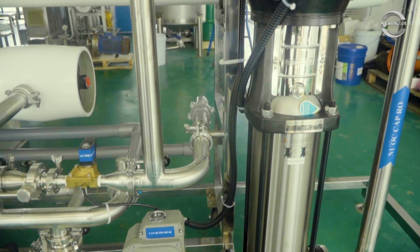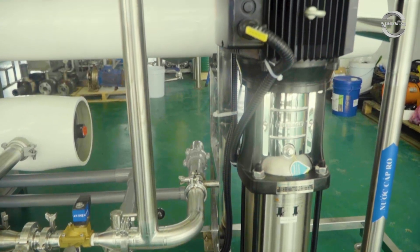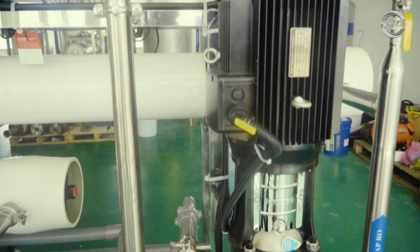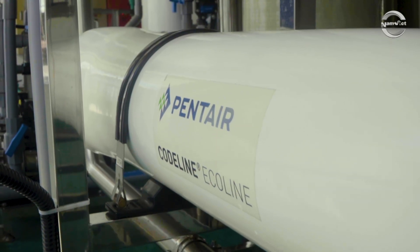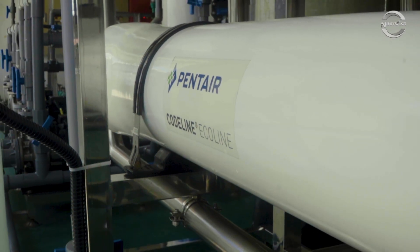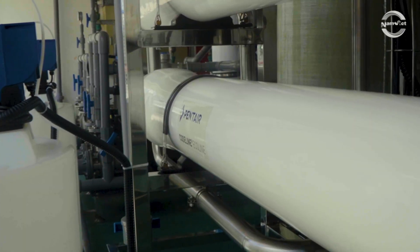A multi-stage high-pressure pump forces water through the RO membrane at high pressure. The RO membrane works on the principle of reverse osmosis, where water moves from a higher concentration to a lower concentration area, producing pure water.